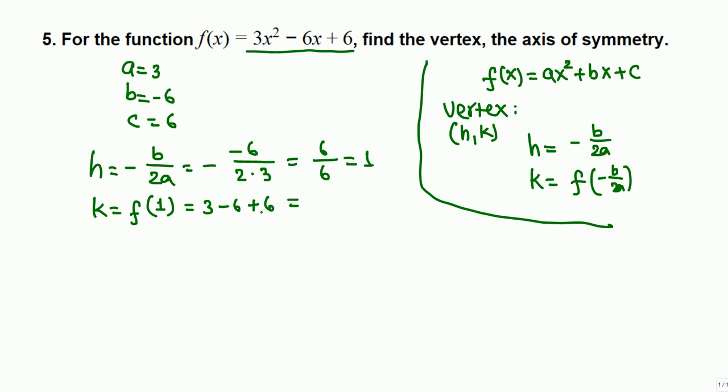Minus 6 plus 6 cancel to just 3. So the vertex is (1, 3), 1 comma 3, and the axis of symmetry is the vertical line x equals the first coordinate.